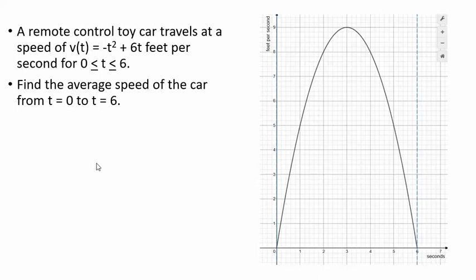When we think about average, we have a lot of practice finding the average if we're just looking at a finite set of points. How do we find the average? We just add up all the numbers and divide by however many numbers we're adding up. But in this case the speed is constantly changing — the speed takes every single value between 0 and 9. At some time the speed was 6.1, at some time 6.2, at some time 6.00025876. So how do we average these speeds? We can't do that in the traditional way because there's an infinite number of speeds.